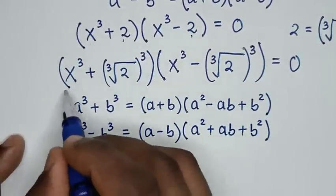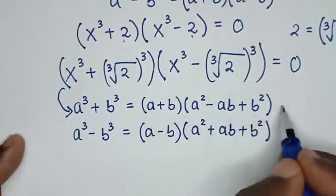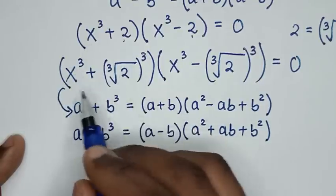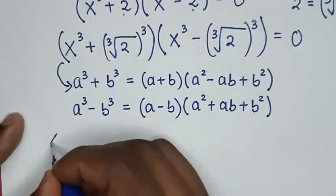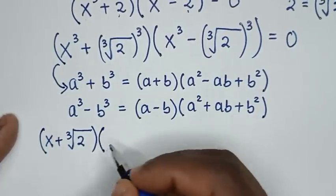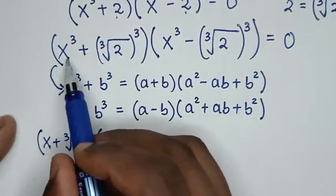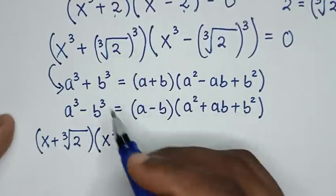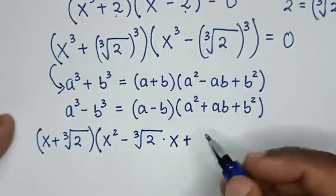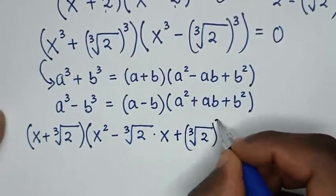Then, in the next step, from the first part here, we apply this rule. By applying a + b, it will be x plus ∛2. So our equation here will be (x + ∛2), then the second factor: a² gives x², then minus ab gives minus x times ∛2, so minus ∛2 times x, then plus b² gives (∛2)², all inside brackets.